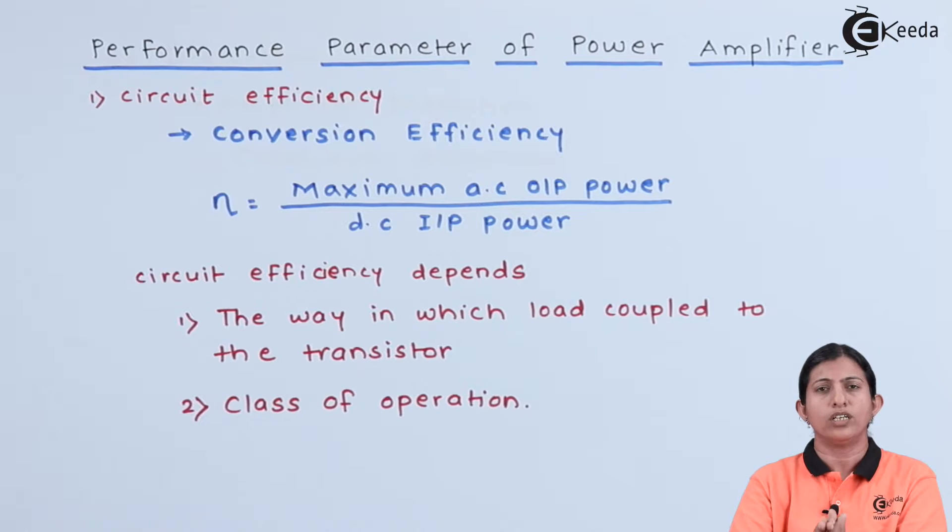In power amplifier, it takes the power from the DC power supply which is connected at the output circuit and converts that power into useful AC power.